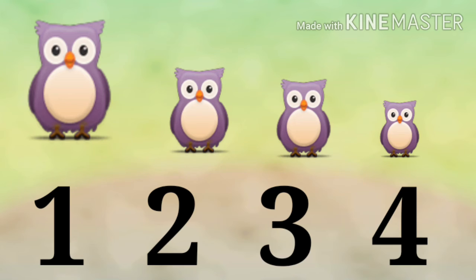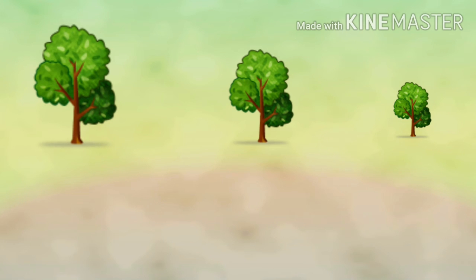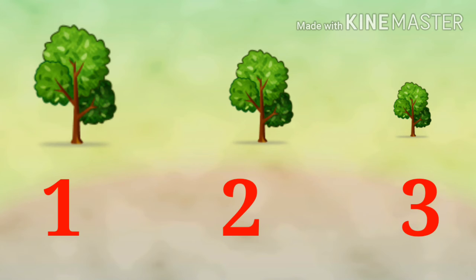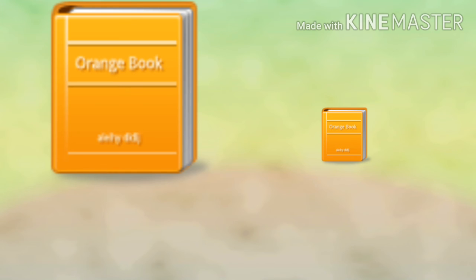Very good. Let's see my children. There are how many owls. There are 4 owls. And which one is smallest and which one is tallest? Now see here, there are 3 trees. Which one is tallest and which one is smallest?